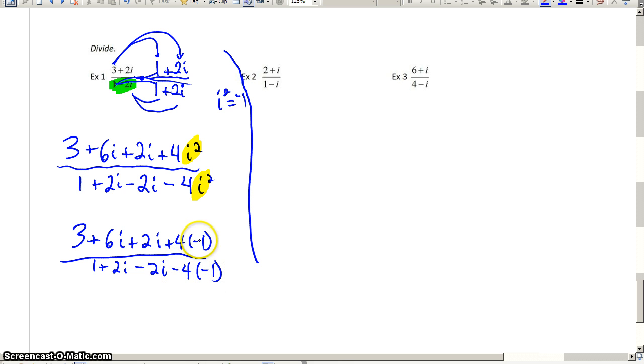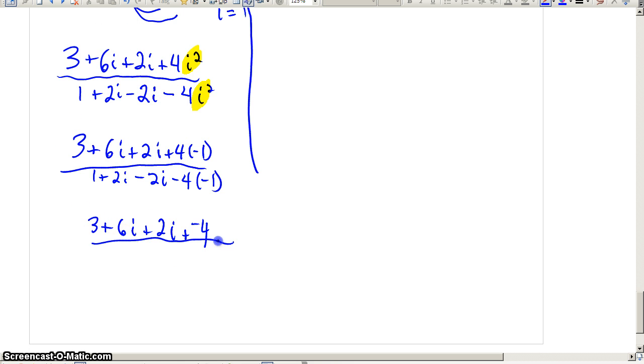And, of course, multiplying the negative 1 to these numbers, we'd have 3 plus 6i plus 2i plus negative 4. Down below, negative 4 times negative 1, that last part. We're just being crystal clear with all of this, where all of this is coming from. Negative 4 times negative 1 would be plus 4. Let's combine our like terms.